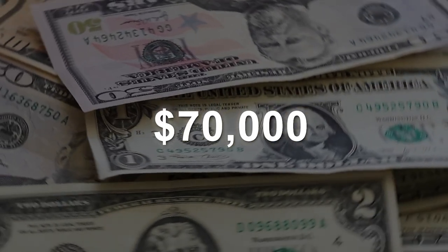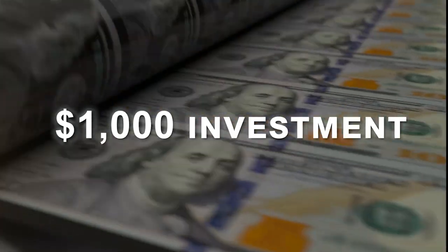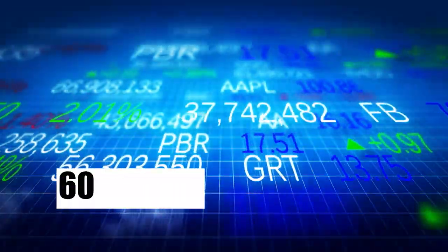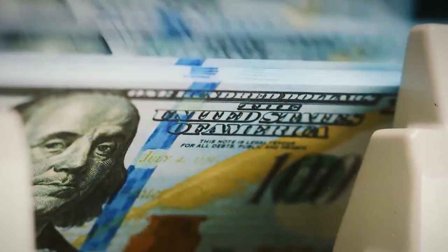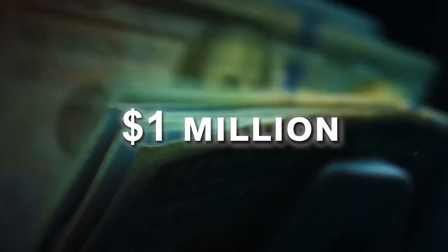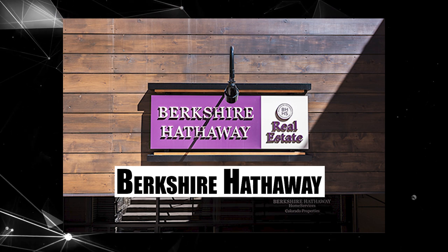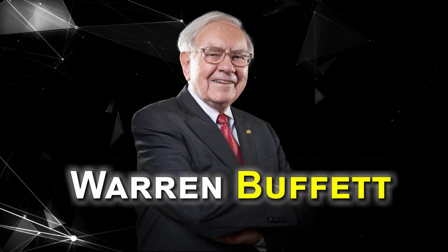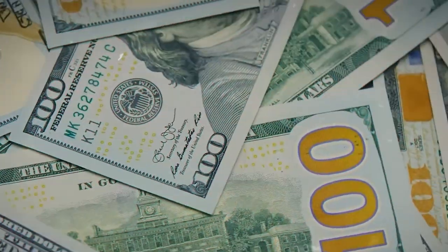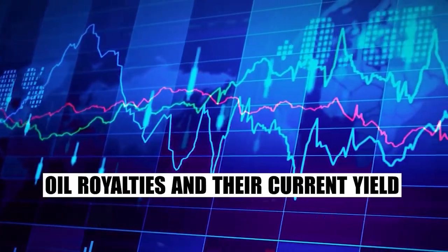Charlie Munger earned $70,000 annually from a $1,000 investment he made more than 60 years ago and has probably profited over $1 million overall from the profitable bet. At Berkshire Hathaway's annual shareholder meeting, Warren Buffett's business partner revealed the original cost of his oil royalties and their current yield.